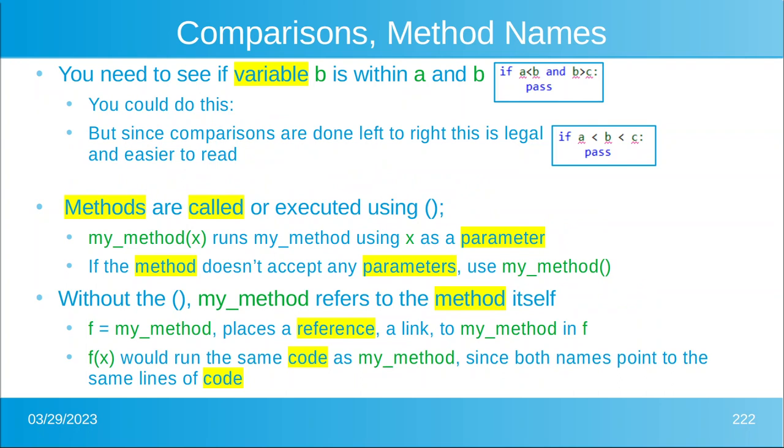Let's suppose that you need to know if some variable b is between a and c. Well you could do what you see there in the first little box. If a is less than b and b is greater than c. But in Python, because comparisons are done left to right and they will keep going until something fails, then you could do if a is less than b less than c, which is easier to read and more along the lines of what you would see in math class.